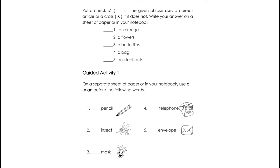Guided Activity 1. Write your answer here in the module. Use A or AN before the following words. Number 1: Pencil — so what are we going to use, A or AN? Number 2: Insect. Number 3: Mask. Number 4: Telephone. And Number 5: Envelope.